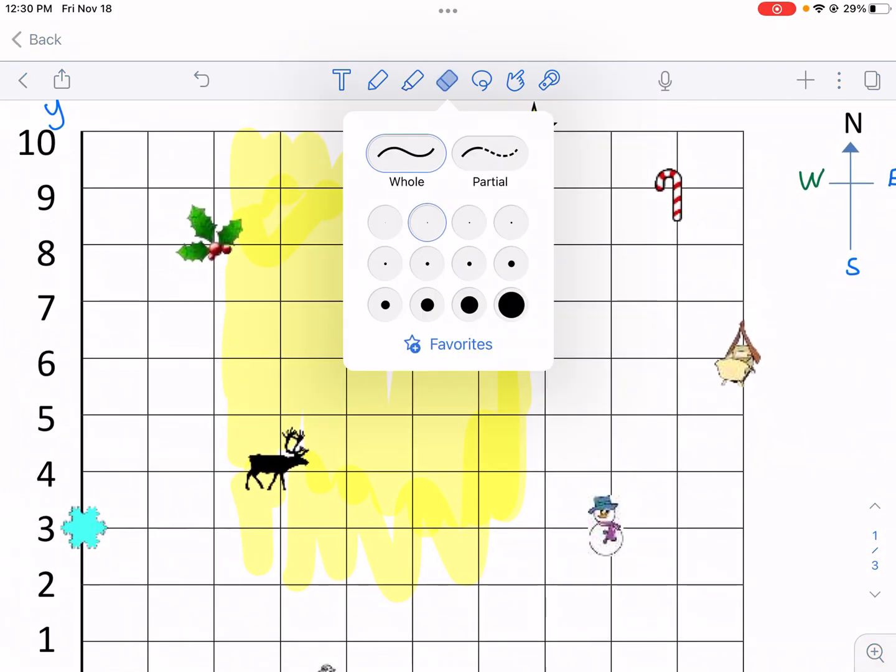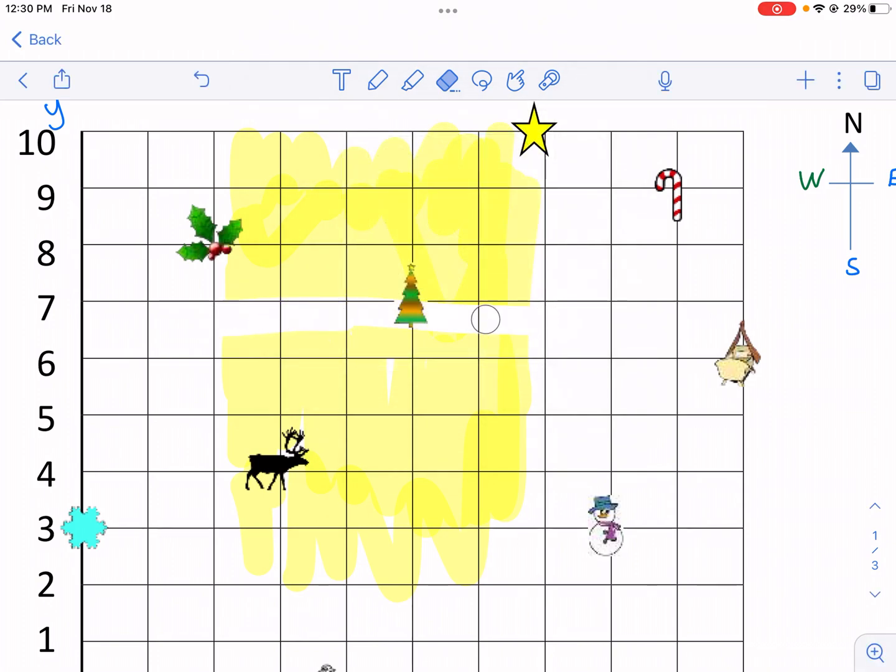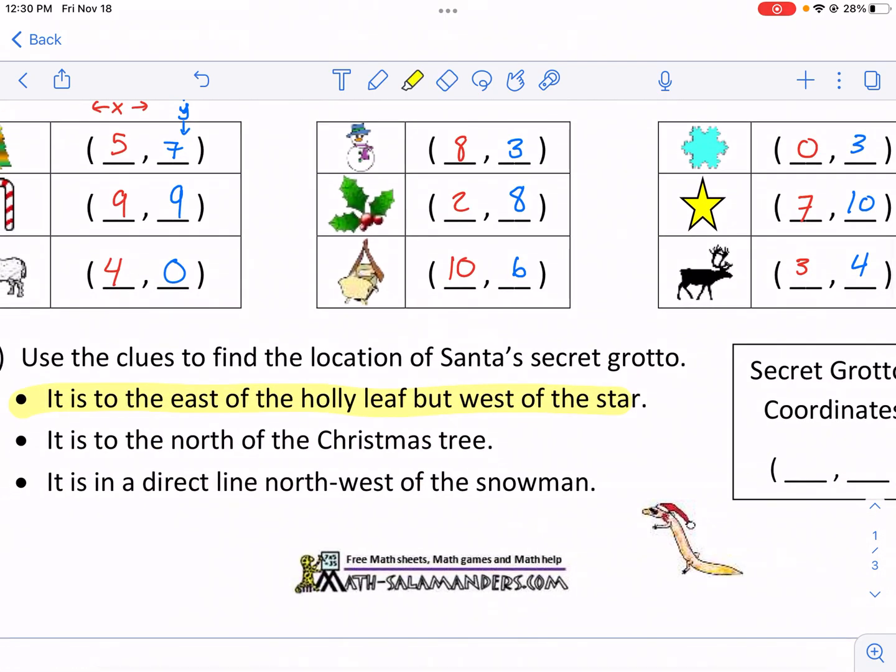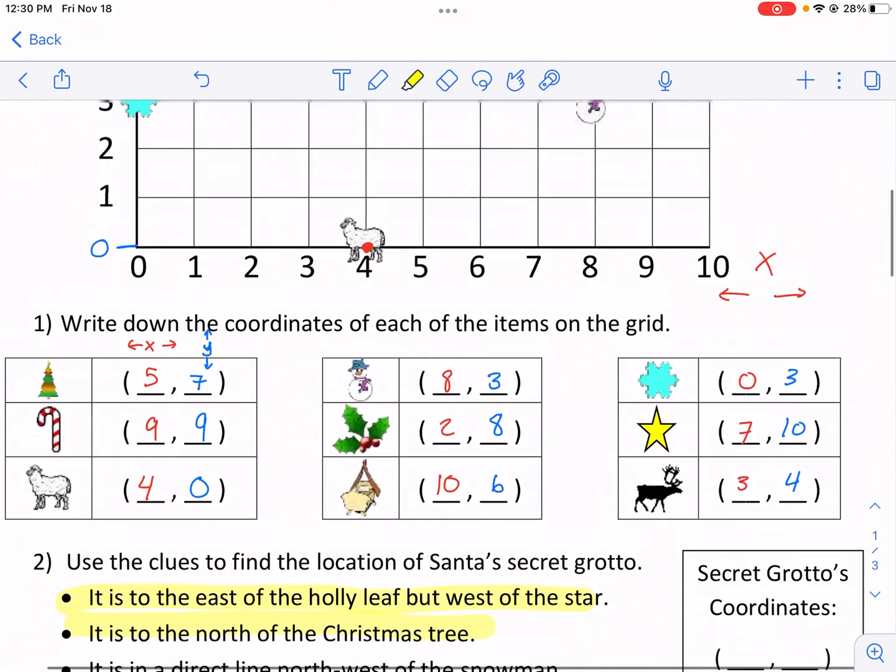So I'm looking at the Christmas tree here, and I see that I definitely went too far. So I need to erase all this, and anything north, that's the area I'm looking in. I've got a couple locations it could still possibly be, so I haven't narrowed it down completely. And then it is a direct line northwest of the snowman.